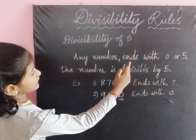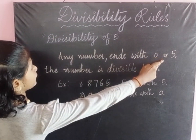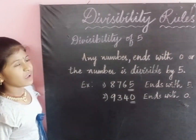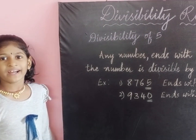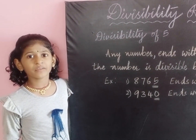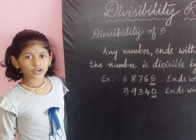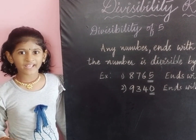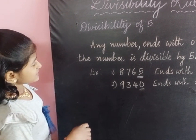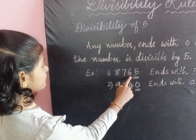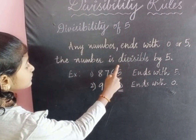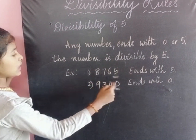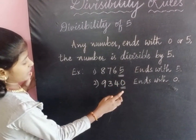Any number that ends with 0 or 5 is divisible by 5. For example, 8765 — this number is ending with 5, so this whole number is divisible by 5.